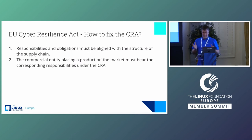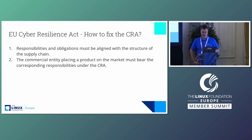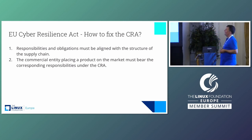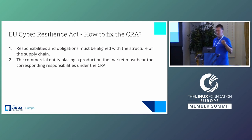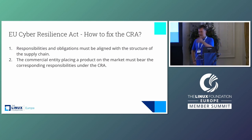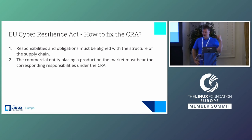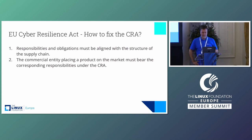We are suggesting that besides the well-developed amendment proposals that the group organized by Open Forum Europe has developed with us, two things should happen with the CRA to make it work. One is that the responsibilities and obligations it imposes must clearly be aligned with the structure of the supply chain — which means anybody who brings a product into the market is responsible for that product's attributes, not for less, but also not for more. You cannot point to upstream and say 'I consumed insecure upstream software, it's their problem' if you introduce a product into the market.